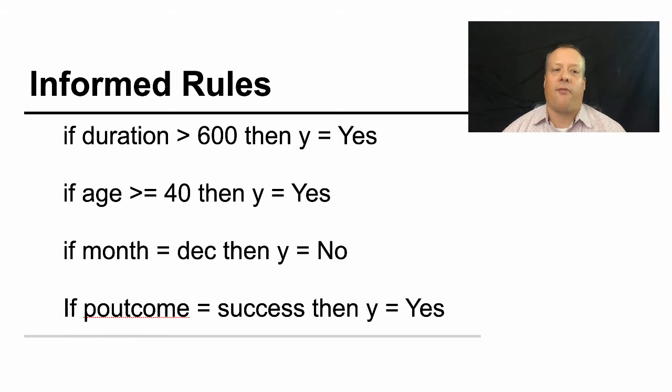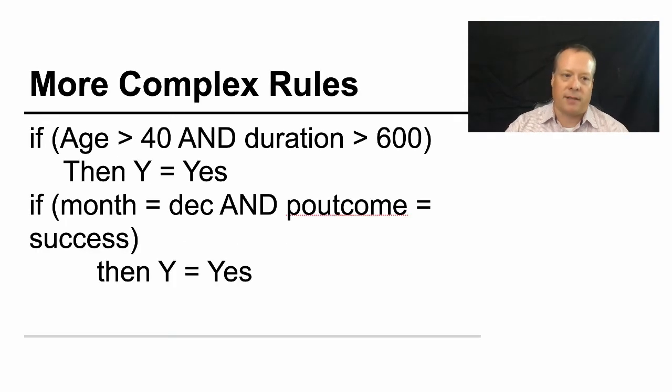So you could have more informed rules. You could study the data and try and group it. You could look at the fact that if the duration of the last call was greater than 600, then they're going to respond. If their age is over 40, then they're more likely to respond. And you might remember some of that from our data exploration. If the month equals December, then they're not going to respond positively. And if the previous outcome was a success, then they may respond positively this time.